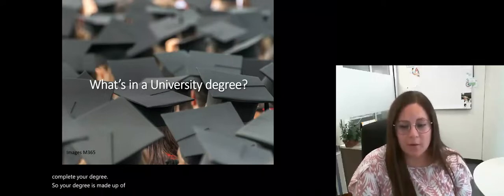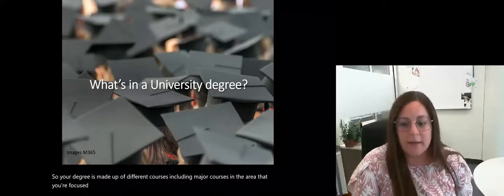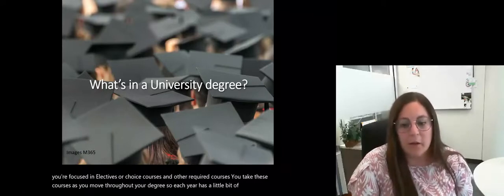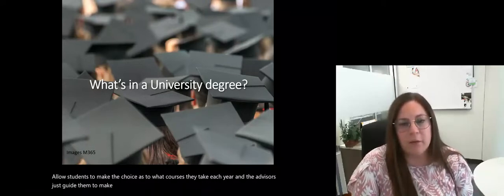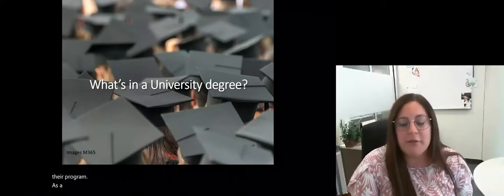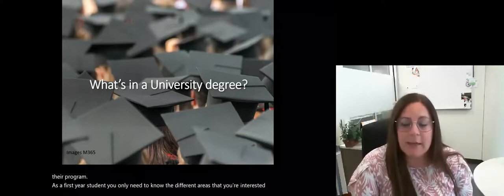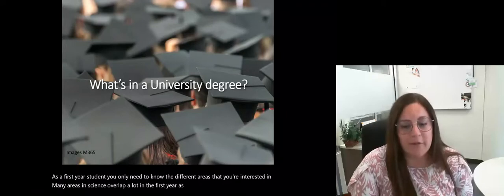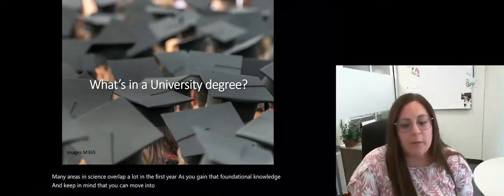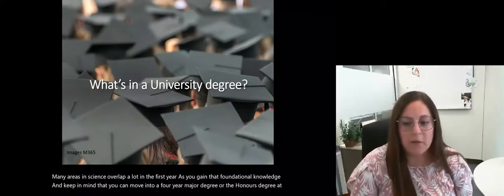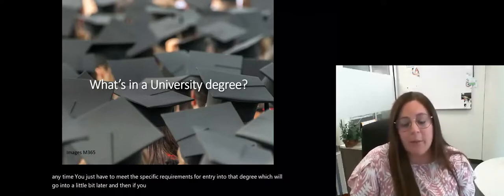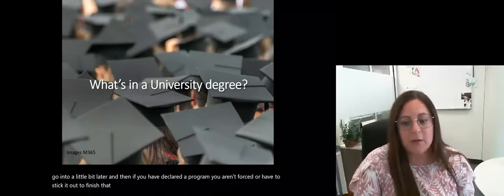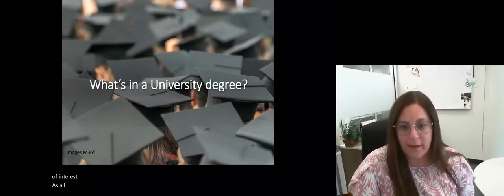Your degree is made up of different courses, including major courses in the area that you're focused in, electives or choice courses, and other required courses. You take these courses as you move throughout your degree, so each year has a little bit of everything. We do allow students to make the choice as to what courses they take each year and the advisors just guide them. As a first-year student, you only need to know the different areas that you're interested in. Many areas in science overlap a lot in the first year. And keep in mind that you can move into a four-year major degree or the honors degree at any time, and if you have declared a program, you aren't forced to stick it out.